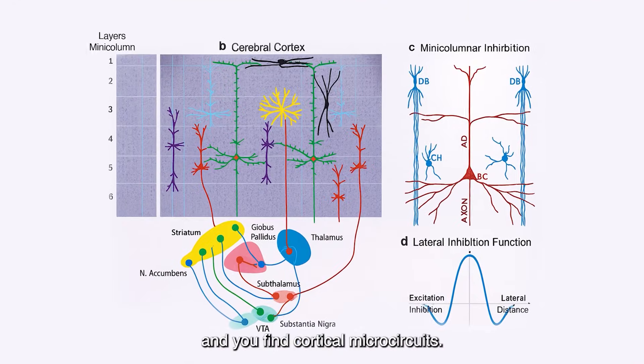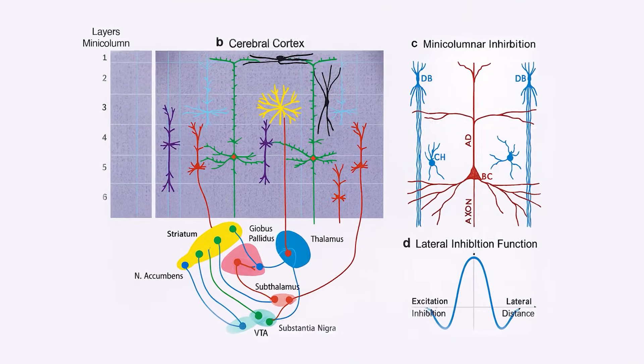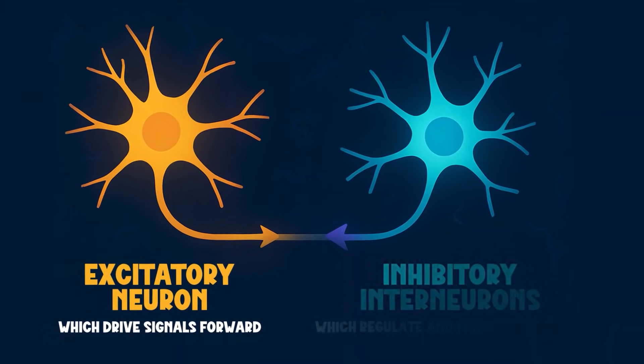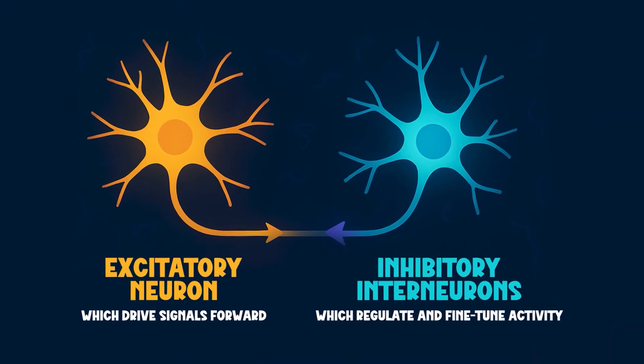Zoom in, and you'll find cortical microcircuits. They're mostly made up of excitatory neurons, which drive signals forward, and inhibitory interneurons, which regulate and fine-tune activity.